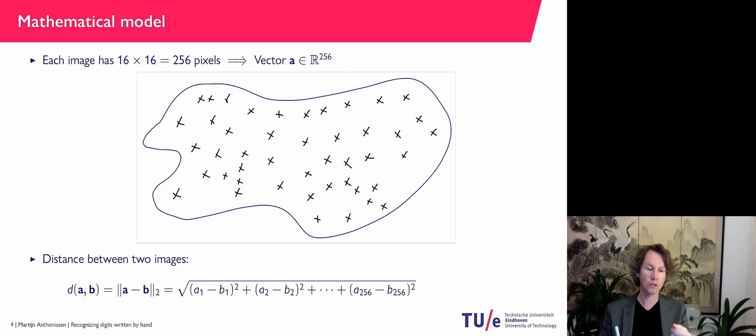So what we do is if we have two images, so two handwritten digits, we build them into a vector.